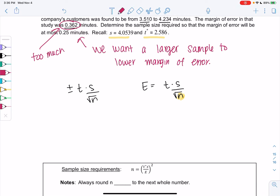I'm going to multiply both sides by the square root of N because that's in my way in the denominator. So we get square root of N times E equals T times S. We'll divide by E.